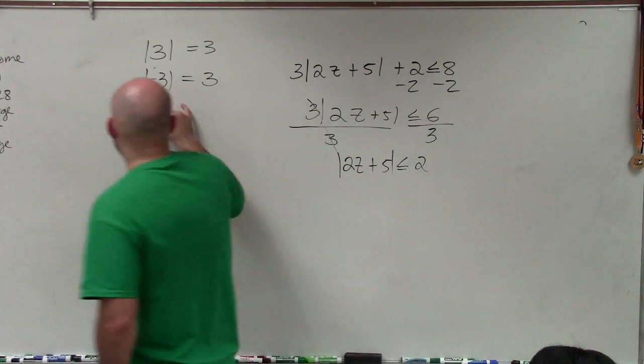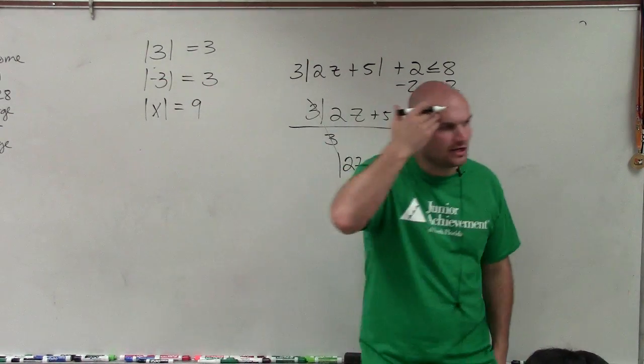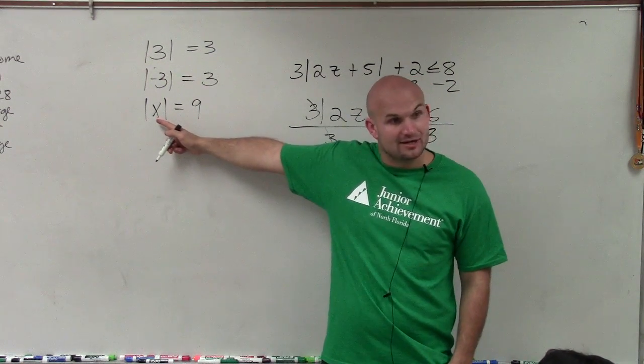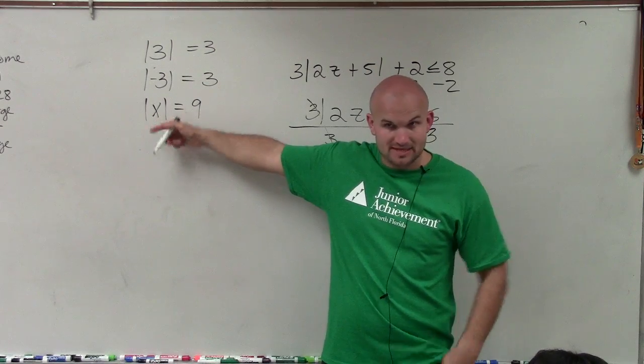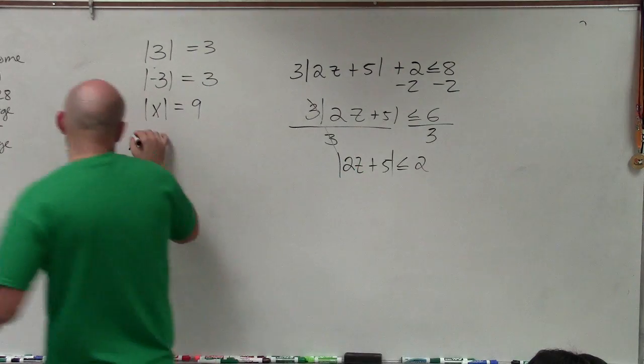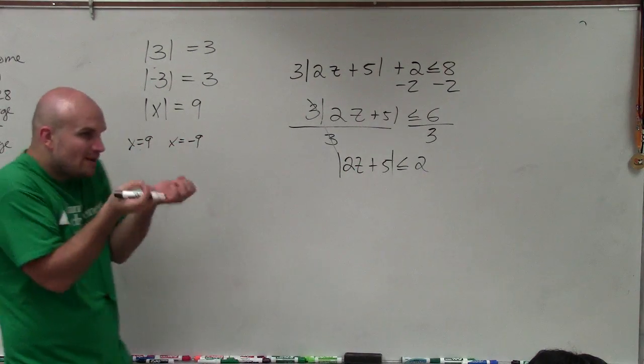So if I said the absolute value of x is equal to 9, hopefully you guys can understand that I could plug in negative 9 for x or I can plug in positive 9, correct? Does that make sense? So there's two opportunities. You could have x equals 9 or x equals negative 9. There's two answers to that.